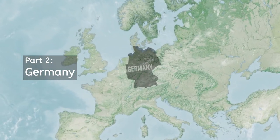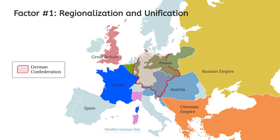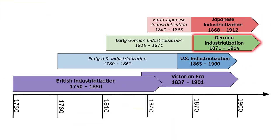Part 2 – Germany. Factor number 1 – Regionalization and Unification. It's hard to pinpoint when German industrialization began because Germany wasn't yet a unified nation. Instead, it was divided into many German-speaking states. Without a central government to support industrialization, some states began to industrialize while others resisted. However, Germany's neighbors – specifically Britain, Belgium, and France – had emerged as industrial powerhouses. Germany had to catch up. After decades of attempts at unification, Germany finally became a single unified nation in 1871, launching it into a period of shockingly rapid industrialization.